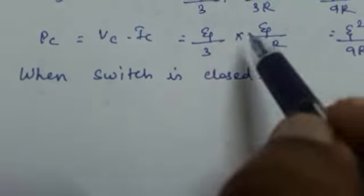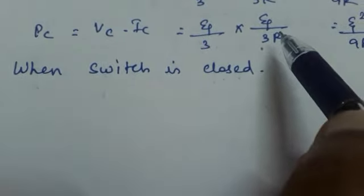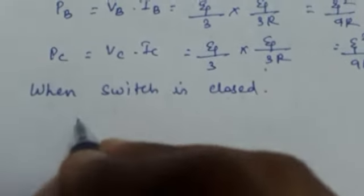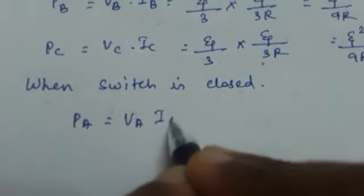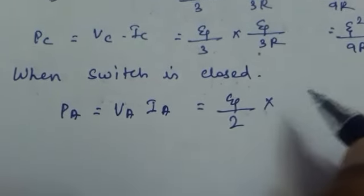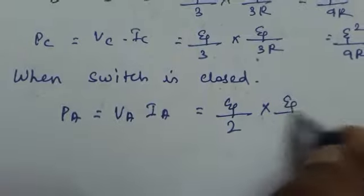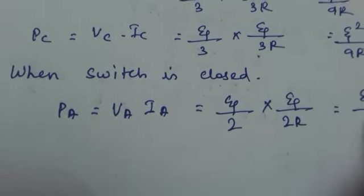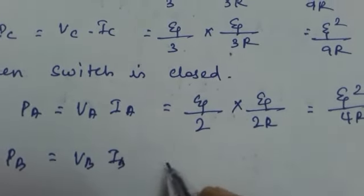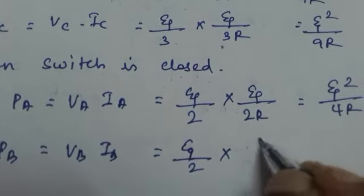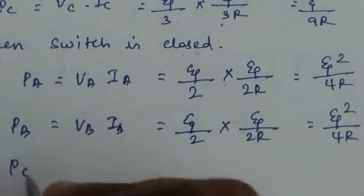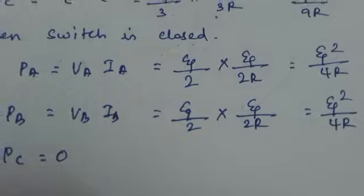When the switch is closed, only bulbs A and B are in series and C carries no current. PA = VA × IA = (ψ/2) × (ψ/2R) = ψ²/4R. Similarly, PB = (ψ/2) × (ψ/2R) = ψ²/4R. Since no current flows through bulb C, PC = 0. The power delivered to bulbs A and B increases when the switch is closed.